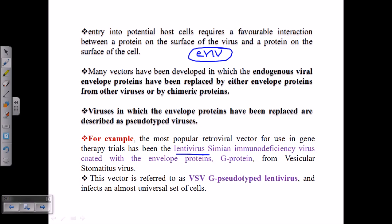If we modify the envelope region to reduce pathogenicity, that would be a blessing for us. The actual goal of pseudotyping is to utilize the envelope protein or envelope gene from other, less dangerous viruses. By changing the envelope-encoding gene and proteins, we can lower the pathogenicity. That is the purpose of pseudotyping.